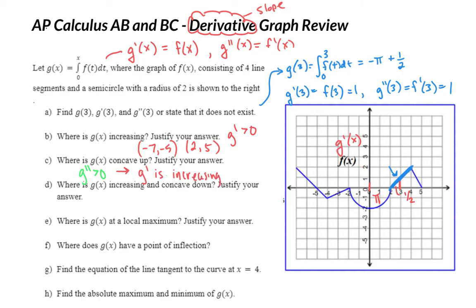Similar to what we'd say if g prime is positive, g is increasing. So we just say, where is g prime increasing? Well, looking at the graph, we've got negative 4 to negative 2, and we've got 0 to 4. So yeah, just everywhere we saw this increasing.